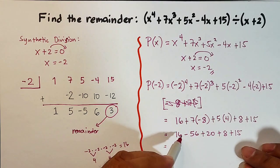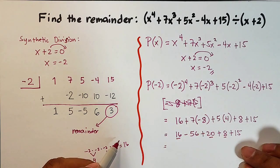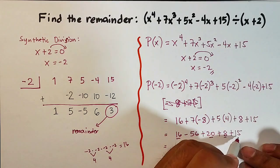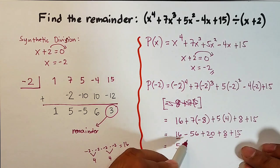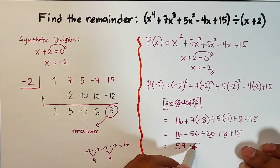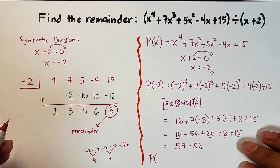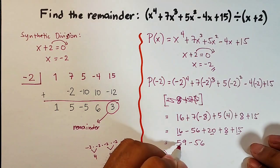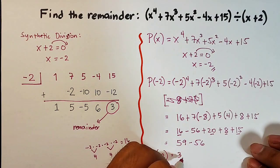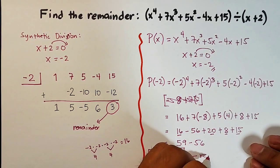Adding the positive values first: 16 plus 20 is 36, plus 8 is 44, plus 15 is 59. Then subtract 56. So p of negative 2 equals 59 minus 56, which equals 3. As you can see, this matches our synthetic division result — the remainder is 3.